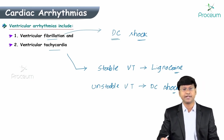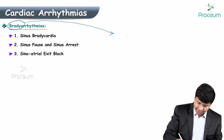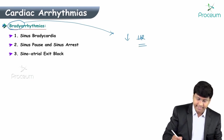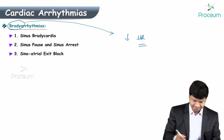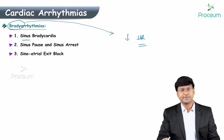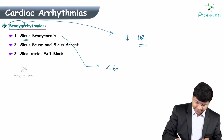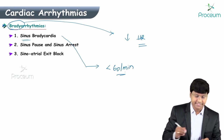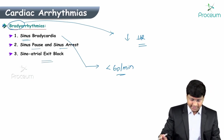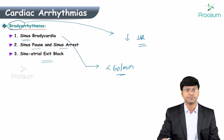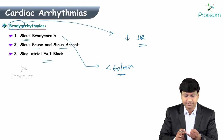Bradyarrhythmias: the word 'brady' means the heart rate is reduced. Normal heart rate is 60 to 100 per minute; less than 60 is bradycardia. Sinus bradycardia means the rhythm is sinus but the heart rate is less than 60 per minute. Other forms of bradyarrhythmias include sinus pause, sinus arrest, and sinoatrial exit block.